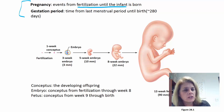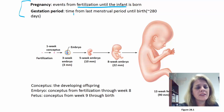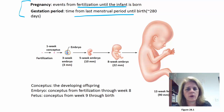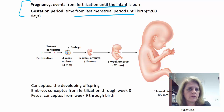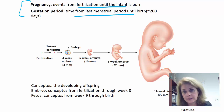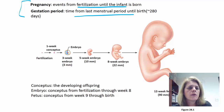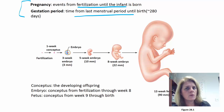Pregnancy is from fertilization until the infant is born. Gestation is from the time of the last menstrual period until birth — that's about 280 days. That's why doctors ask when the first day of your last period was: they're figuring out your gestation period, which gives a more accurate calculation of how far along you are.